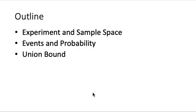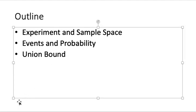Lecture 1. In this lecture, we will talk about events and probability. But before that, we will define what is meant by an experiment and what is a sample space. And after that, we will talk about events and probability. And finally, we will introduce a very useful bound called union bound. So let's begin.